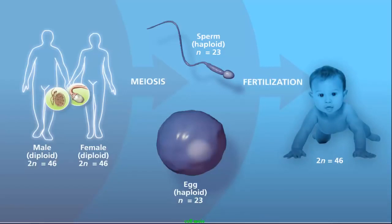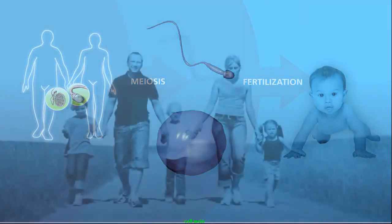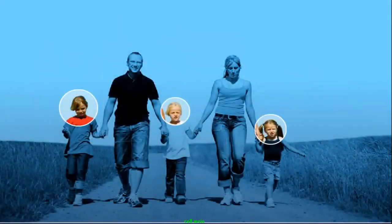The child receives half its chromosomes from its mother and half from its father. Because men and women produce millions of gametes, and the selection of gametes in fertilization is random, this contributes to genetic diversity. This explains why a child isn't identical to either parent. But why aren't siblings identical?